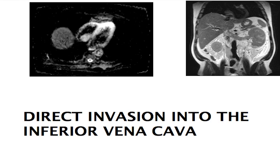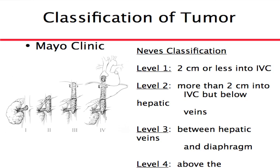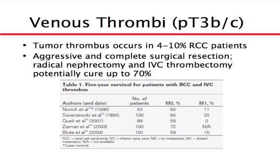Starting with invasion into the vein — either the renal vein or the inferior vena cava — this is classified by the Mayo Clinic system. Level 1 is from the kidney into the renal vein and barely into the vena cava. Level 2 has gone into the vena cava but still below the liver. Level 3 is above the liver veins but not in the heart. Level 4 has extended into the heart. This tumor thrombus — tumor inside the vein — occurs in up to 10% of patients with kidney cancer.